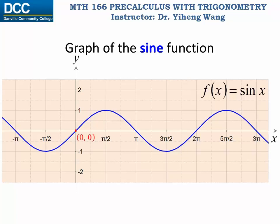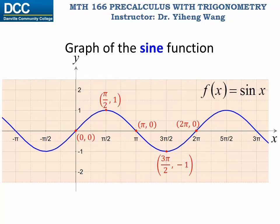The five special points are: the intercept (0, 0), the maximum (π/2, 1), the intercept (π, 0), the minimum (3π/2, −1), and the intercept (2π, 0) — completing the first period of the sine function. Connect these five points with a smooth curve and you get the graph of the sine function.